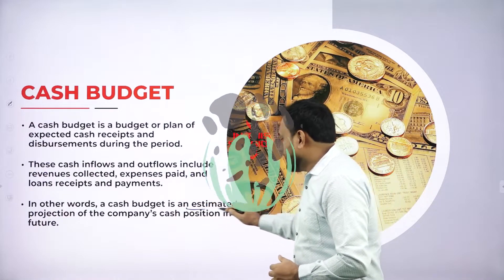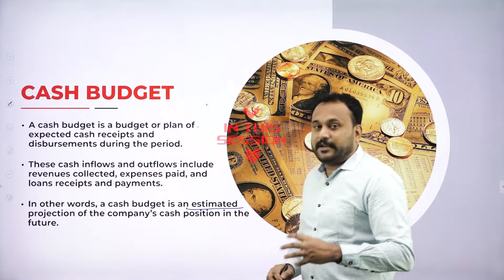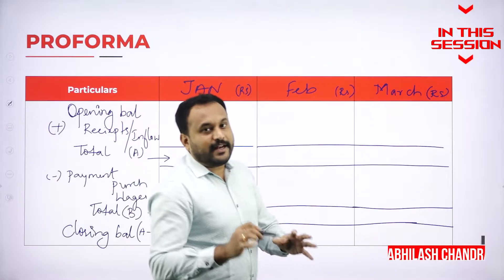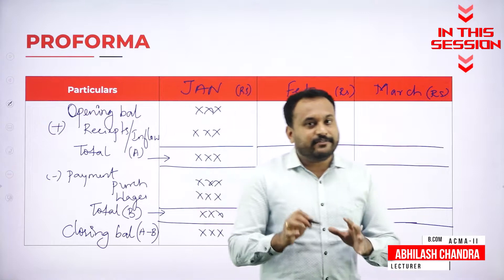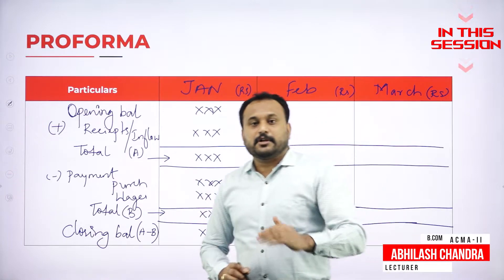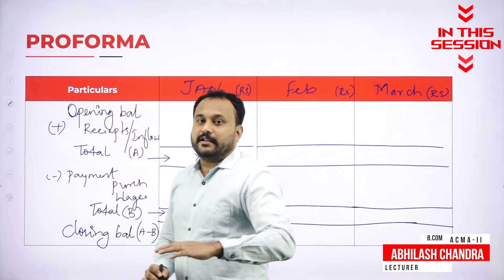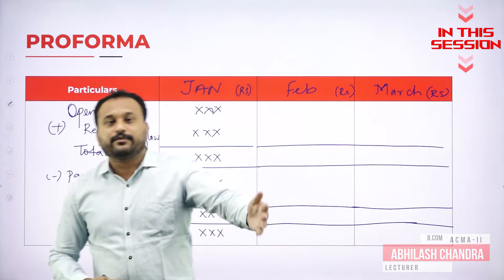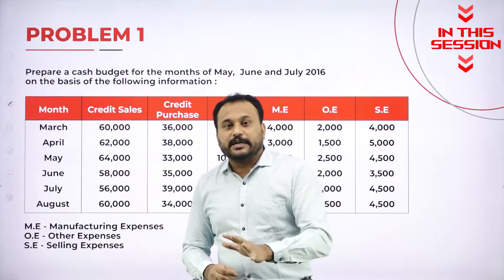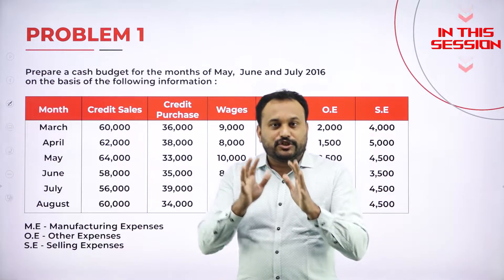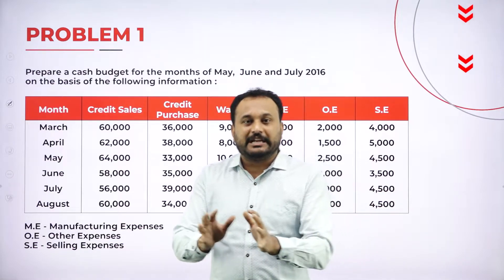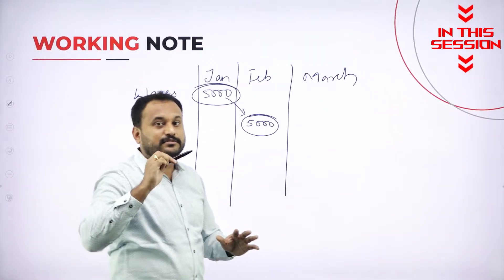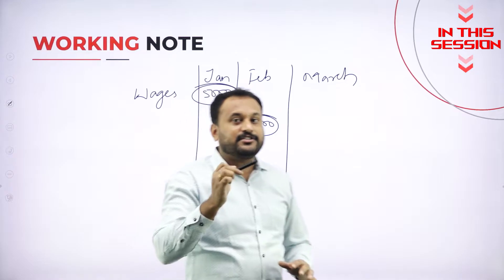Cash budget is an estimated projection. The closing balance of January will become the opening balance of February. Cash budget is a sure 15 marks question. Whatever the question it is, you are supposed to see the additional information.